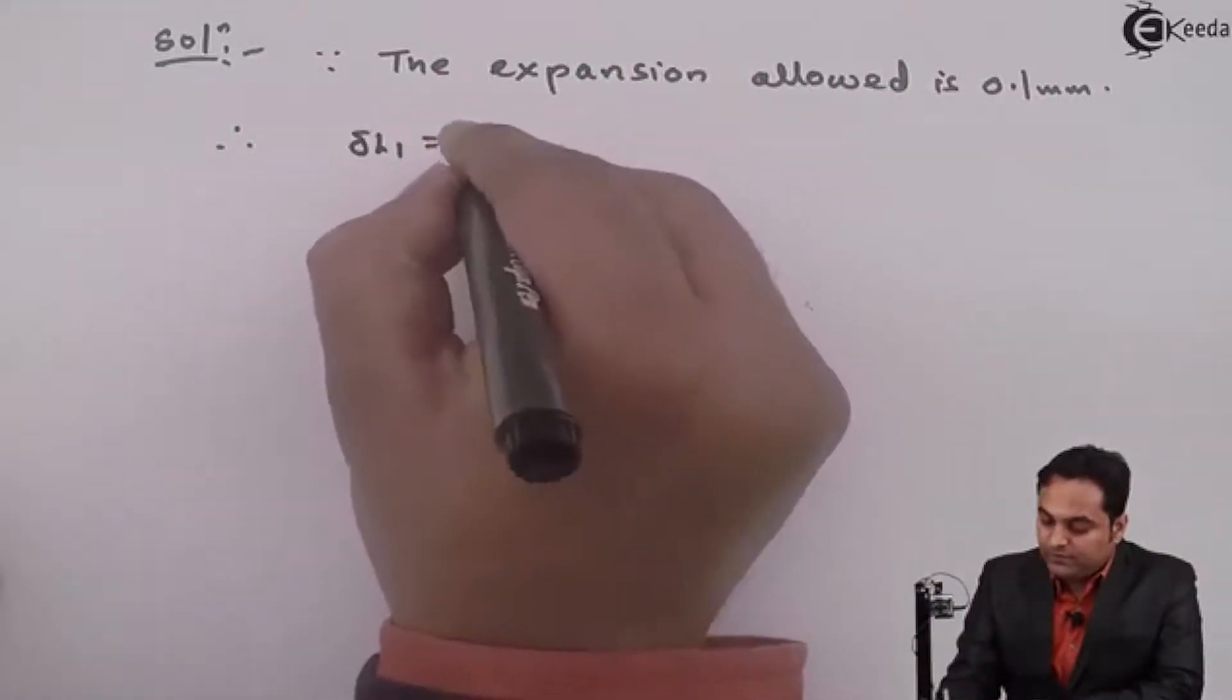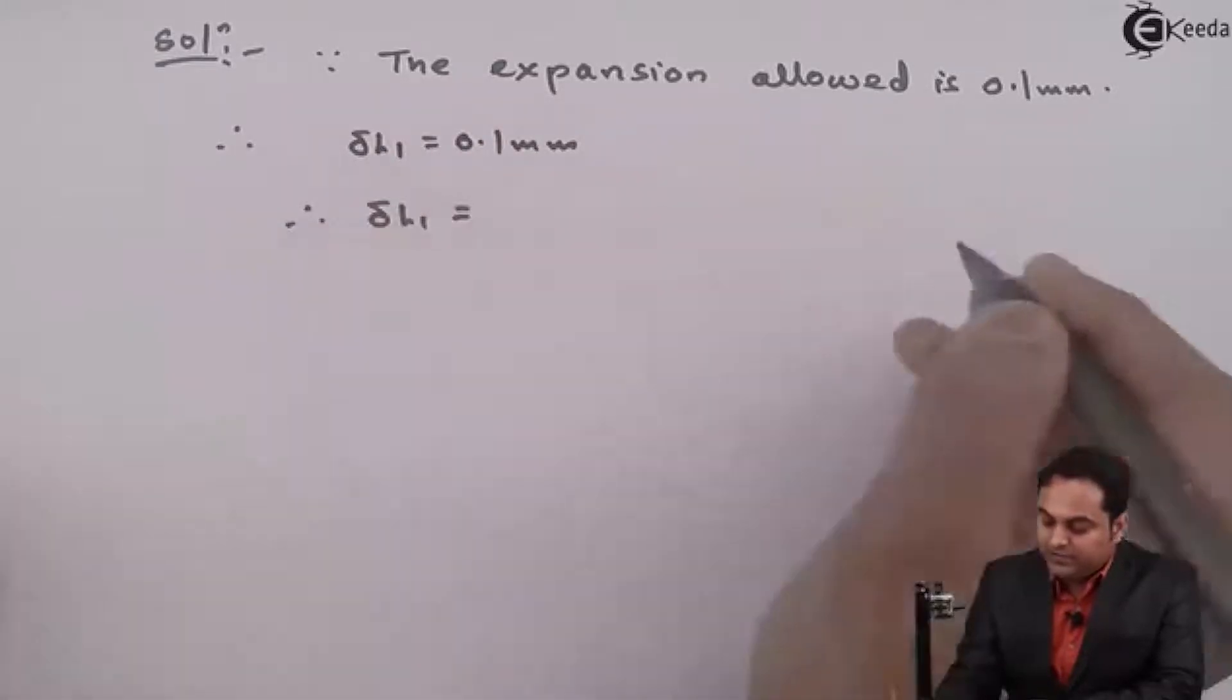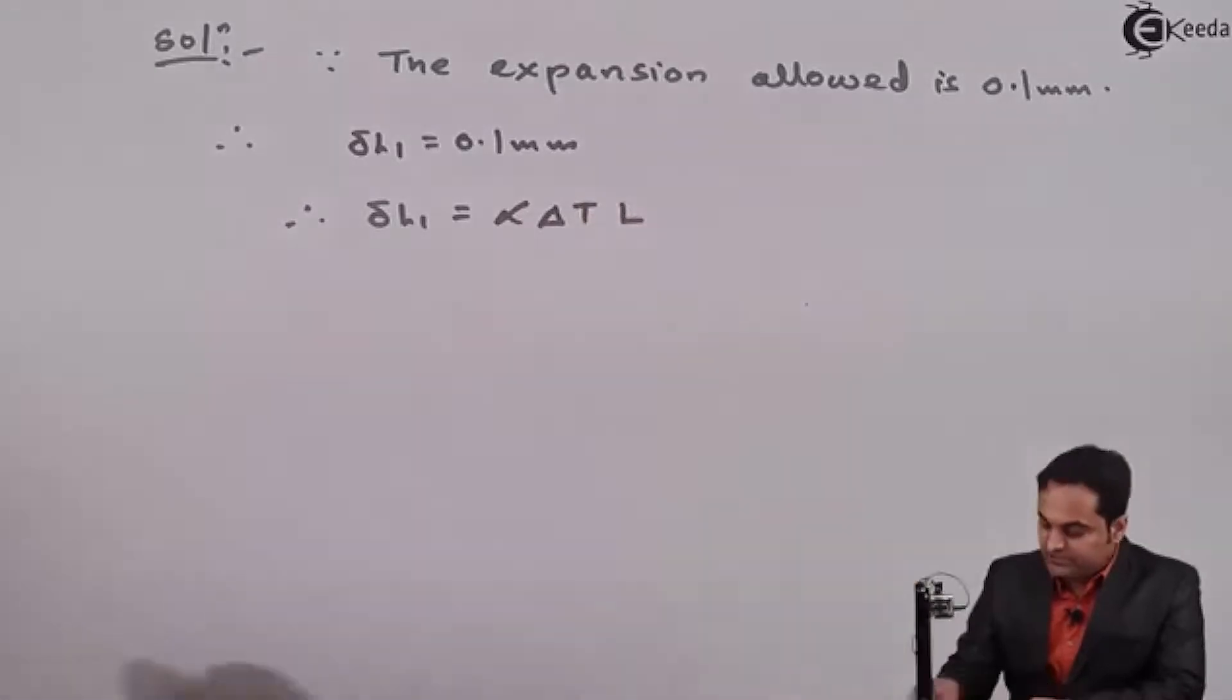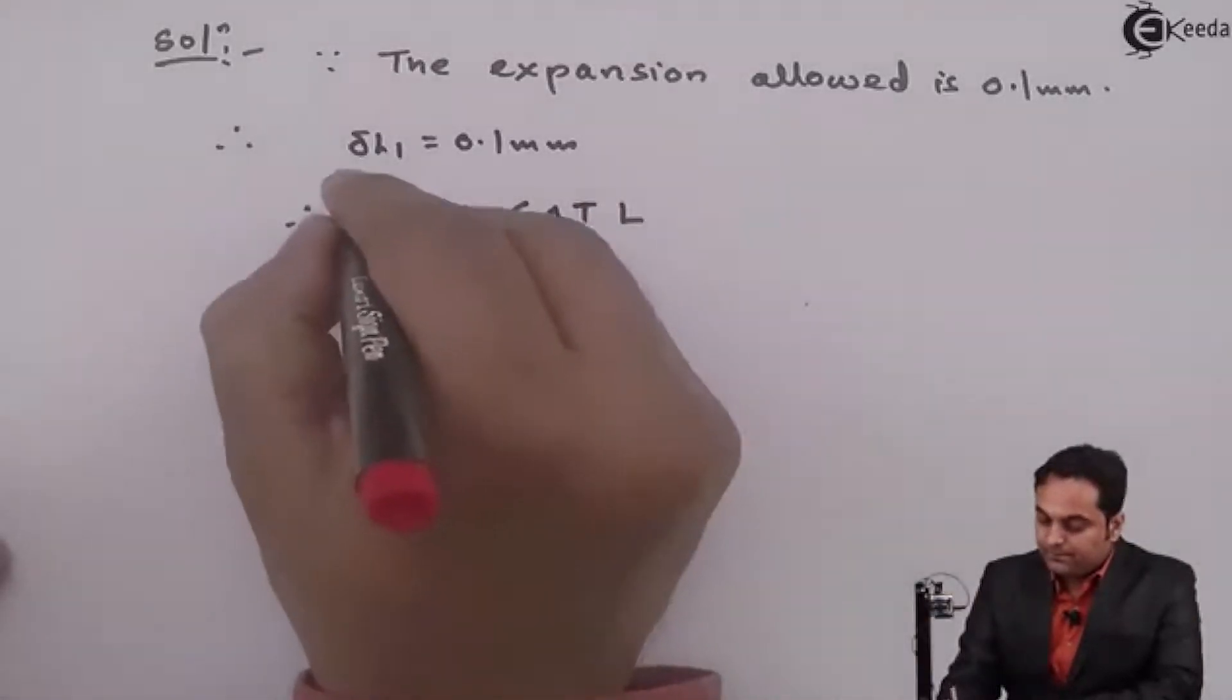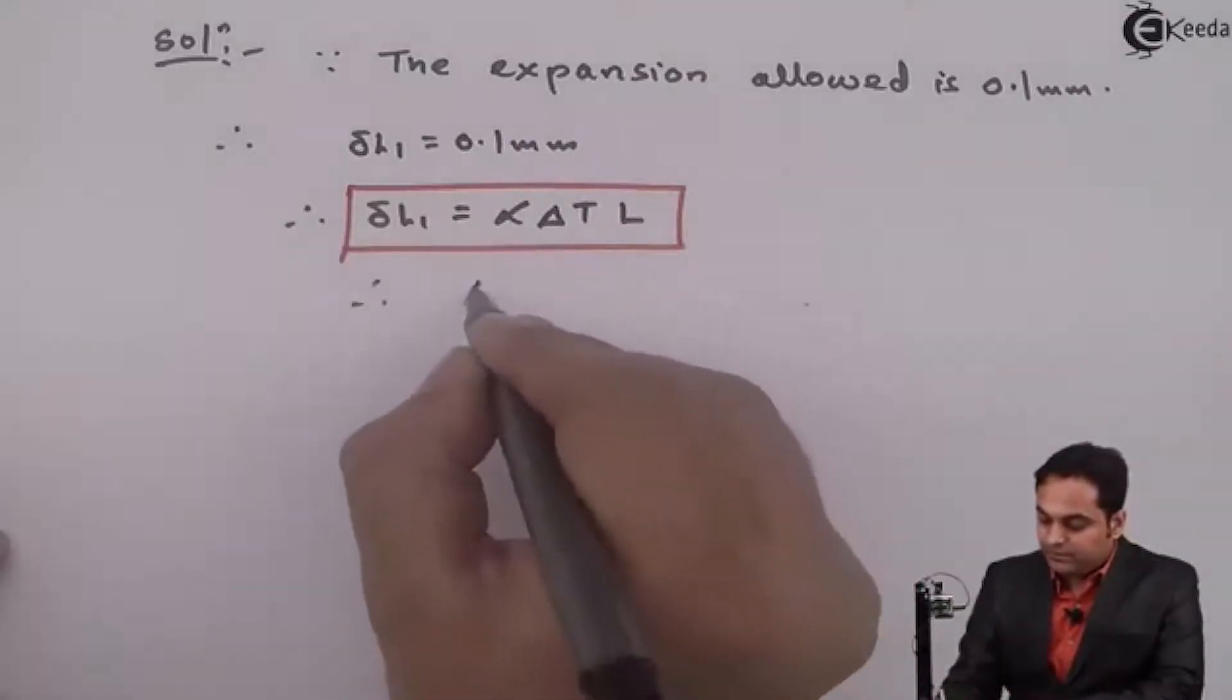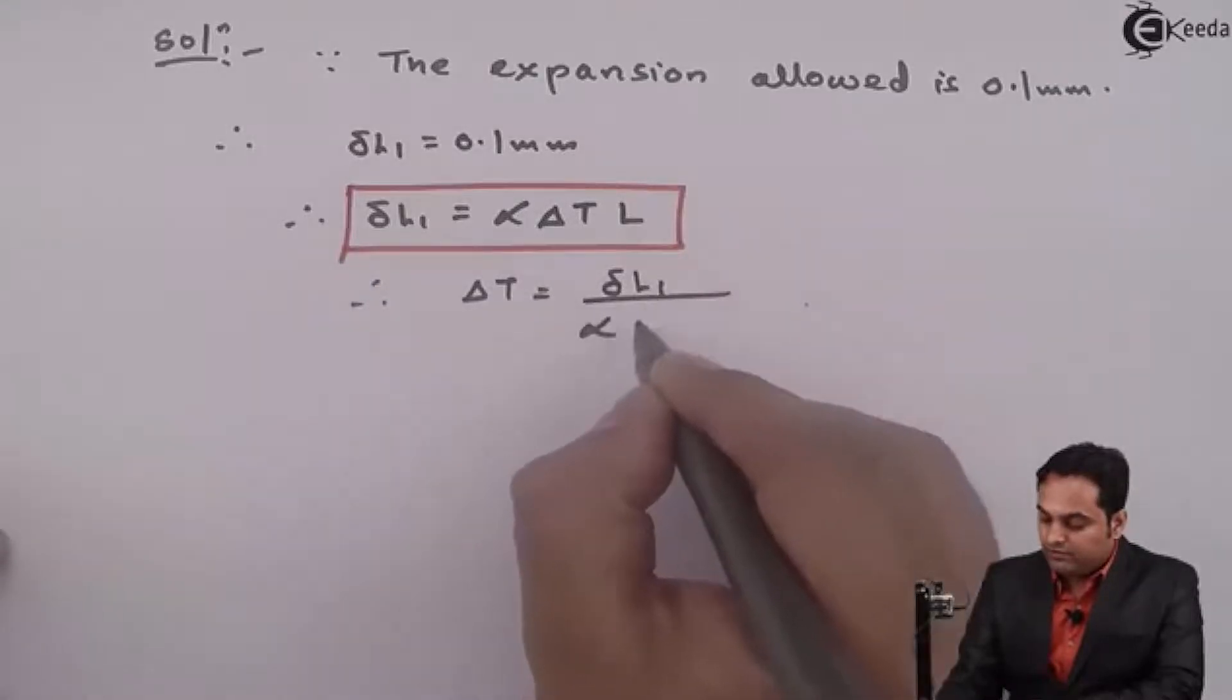Therefore we can use the formula that this expansion allowed is nothing but, I denote it as delta L₁ is equal to 0.1 mm. So this delta L₁ will be nothing but alpha into delta T into L, that is the free expansion.